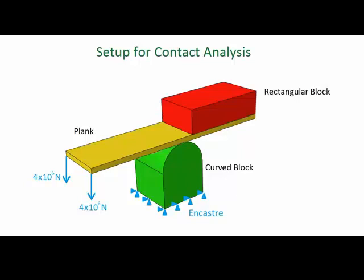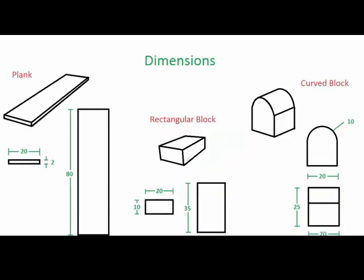A force is applied on the free end of the plank pushing it downward so that it bends around the curved block. At the same time, the rectangular block holds the top surface of the plank flat, preventing it from arching upwards. The dimensions of the parts are displayed in the figure.